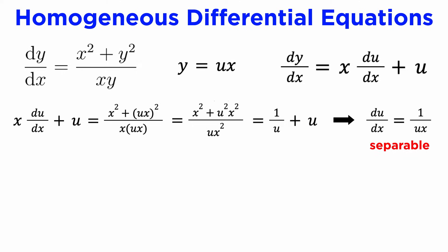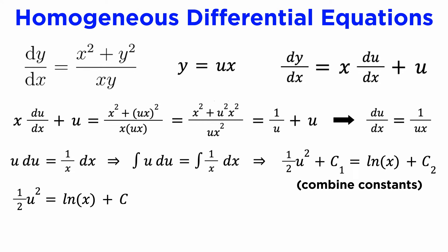Notice that this is a separable differential equation with u as the dependent variable instead of y. We already know that to solve a separable DE, we separate the variables and integrate both sides. Doing this for our DE gives 1/2 u squared equals log of x plus c, where c is an arbitrary constant.